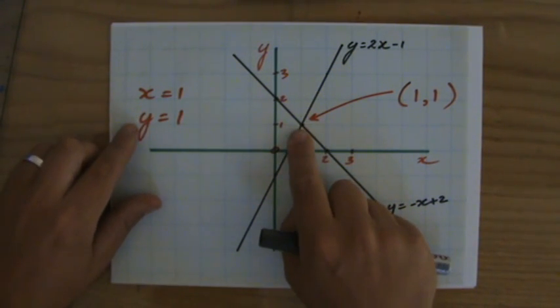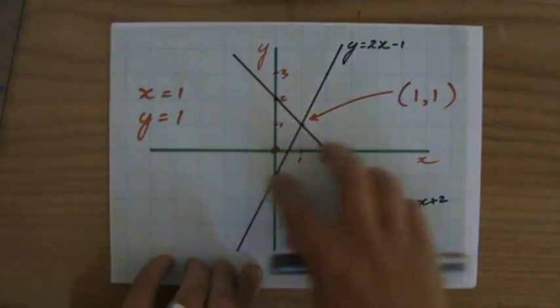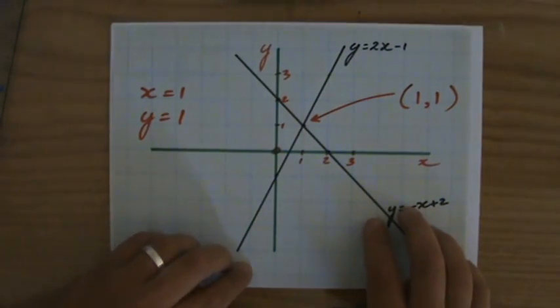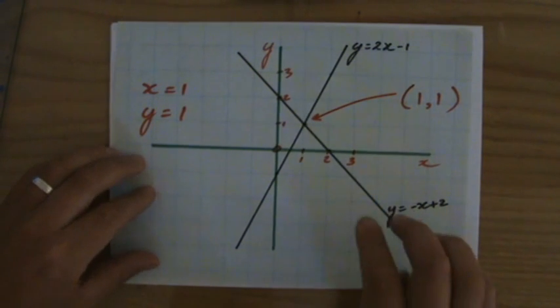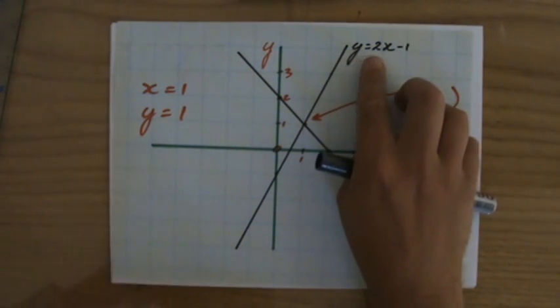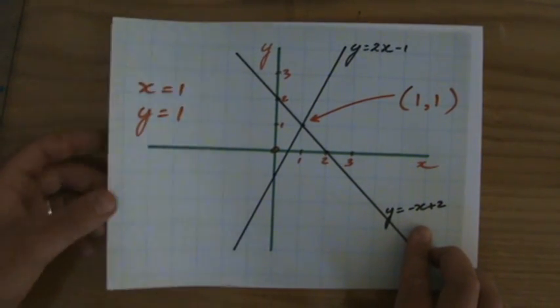That was x = 1 and y = 1. The good thing about the previous question was that both equations were written in gradient-intercept form: y = mx + c, y = 2x - 1, y = -x + 2.